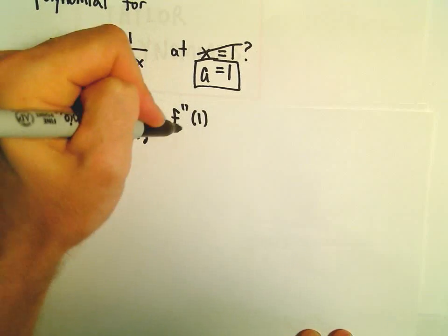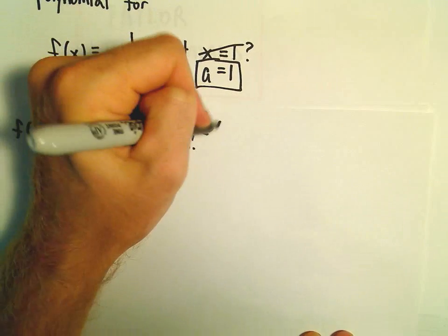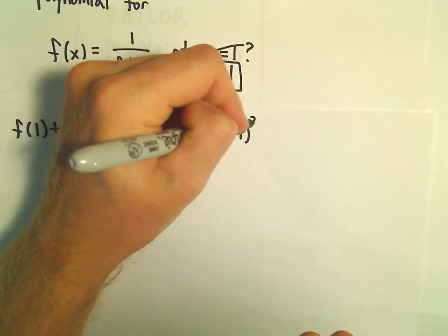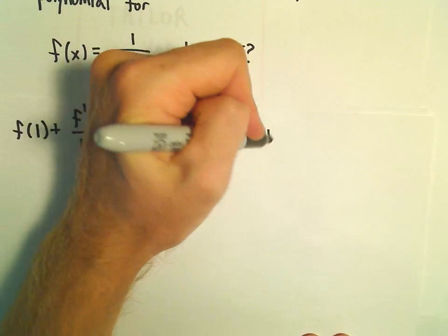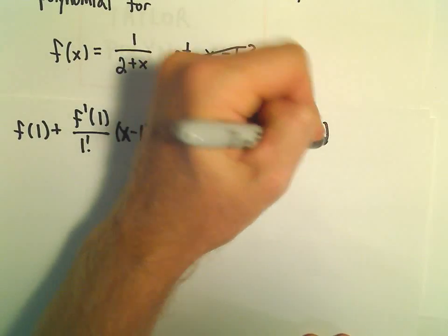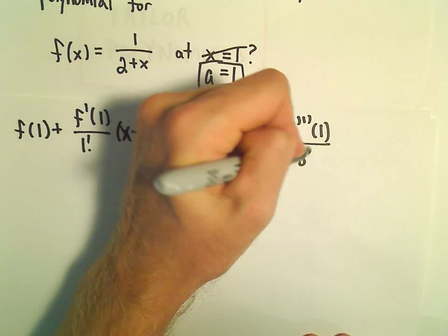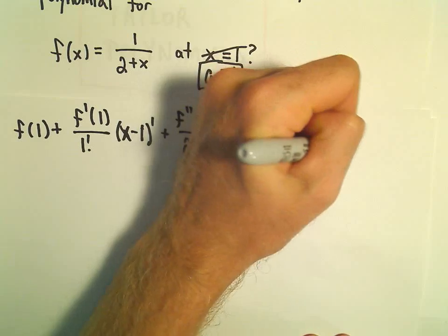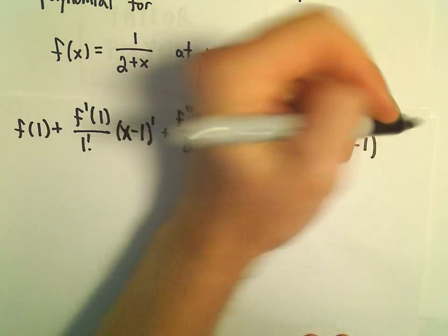Plus f double prime of a over 2 factorial times x minus a to the second, and for third-degree we'll have f triple prime of a over 3 factorial and then x minus our a value cubed.